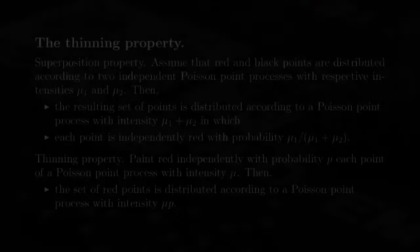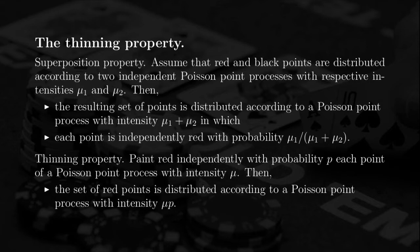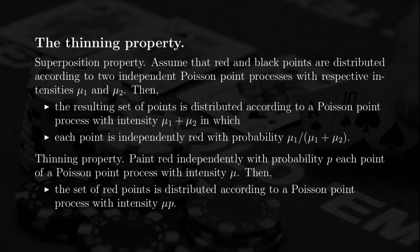Looking at the slide: the superposition property states that red and black points distributed according to independent Poisson Point processes with intensities mu1 and mu2 have a superposition that is Poisson with intensity mu1 plus mu2, and each point is independently red or black with probability mu1 or mu2 divided by mu1 plus mu2. The thinning property states that starting with a Poisson Point process with intensity mu1, painting each point red independently with probability p, the resulting set of red points is a Poisson Point process with intensity mu1 times p.